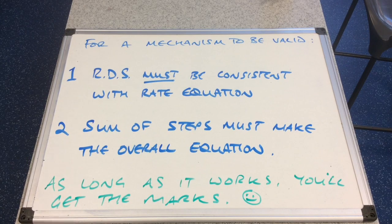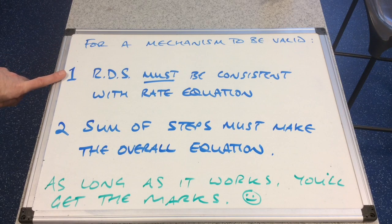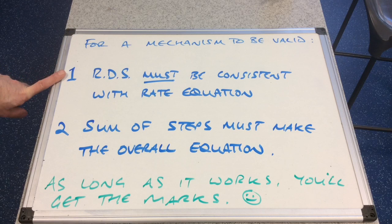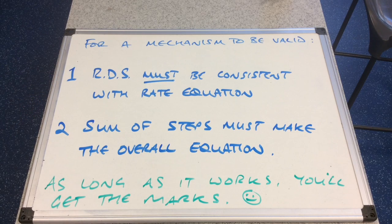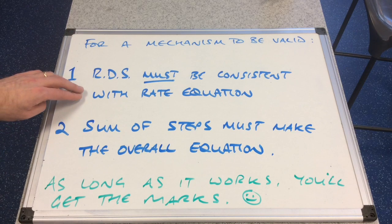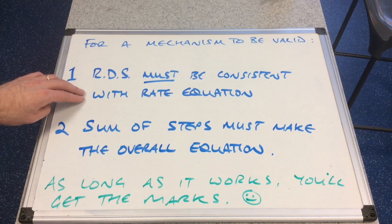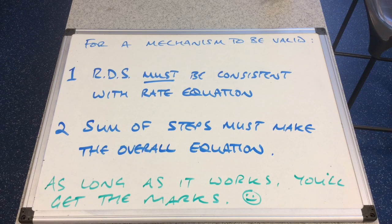We'll just finish with this final reminder. For a mechanism to be valid, it must satisfy this first point. The rate determinant step must be consistent with the rate equation. So that's the bit about the reactants in the rate determinant step must comply with what the rate equation is saying. So if you've got rate equals K, A to the power 2, B to the power 1, that means there'll be two molecules of A reacting with one molecule of B in the rate determinant step.